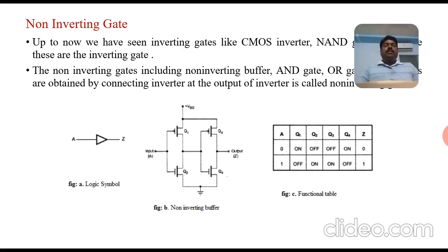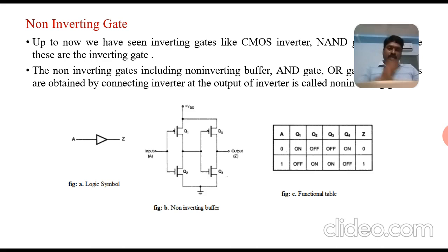Non-inverting gates: Up to now we have seen inverting gates — CMOS inverter, NAND gate, and NOR gate. Non-inverting buffers, AND gate, and OR gate are obtained by connecting an inverter at the output of another inverter. The output of a first inverter connected to a second inverter acts as a buffer. In figure B, the first part Q1 and Q2 form a CMOS inverter, and the second part Q3 and Q4 form another CMOS inverter — interfacing them creates a non-inverting buffer.